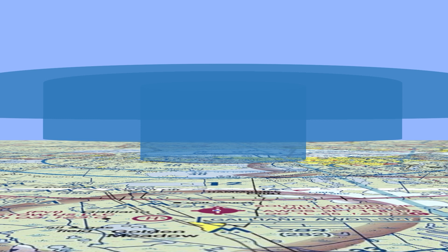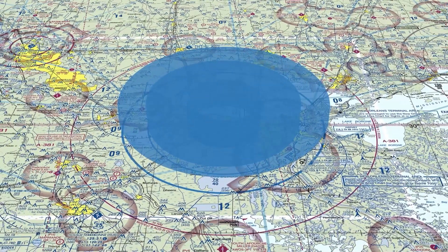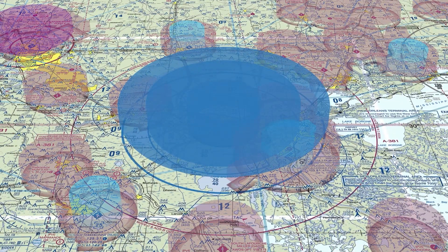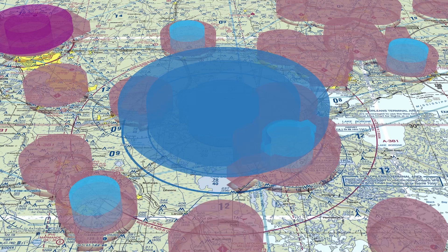So there you have it — a much more intelligible way of representing how airspace classifications work. Using this visualization, we can now see that the purpose for these concentric rings is to provide protected airspace for large aircraft on approach to, or taking off from, airport runways. While this covers the main idea, it's useful to understand that these things can also get pretty complicated in the real world, often overlapping or requiring modified boundaries for terrain and other considerations.